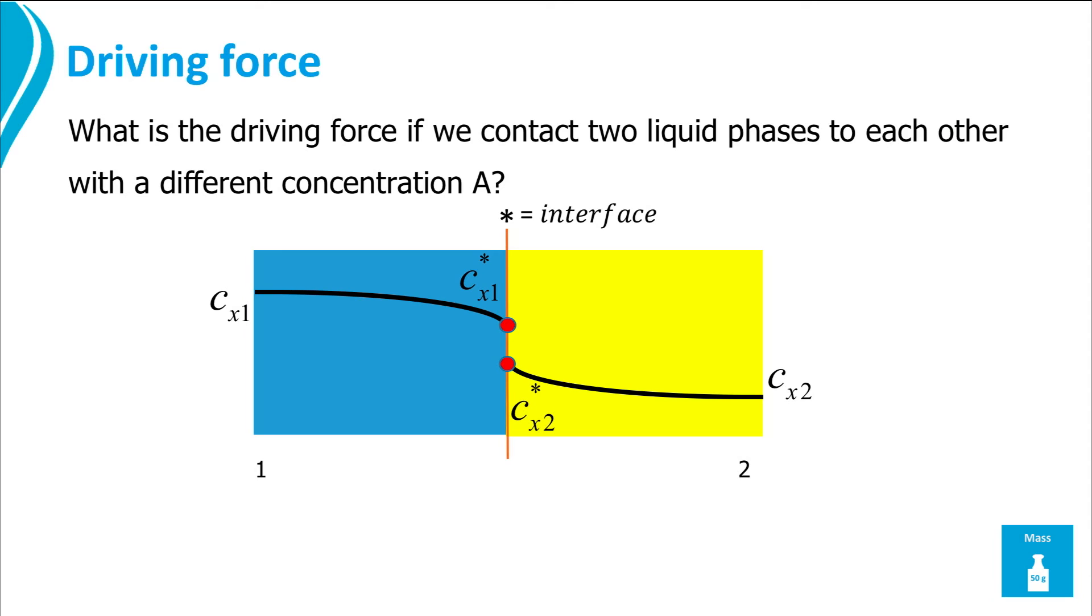Generally we assume that at the interface the two phases are in equilibrium, but at a certain distance from the interface component x does not see the other phase. However there is a concentration difference of the component x in the bulk of each phase leading to transport to the interface. And from the interface, and after a long time both phases are in equilibrium, and there is no driving force anymore.